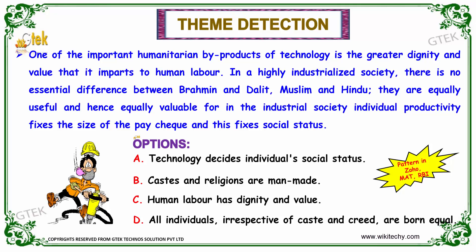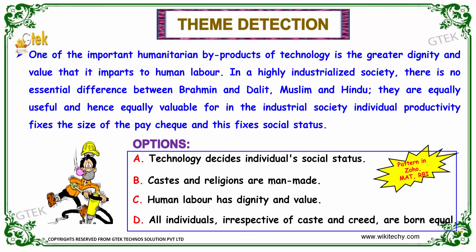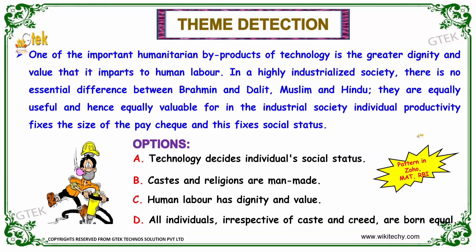So, these are the options provided to detect the theme of the paragraph. Option A: Technology decides individual's social status. Option B: Caste and religions are man-made. Option C: Human labor has dignity and value. Option D: All individuals, irrespective of caste and creed, are born equal. Which of the options depicts the theme of the passage given over here?